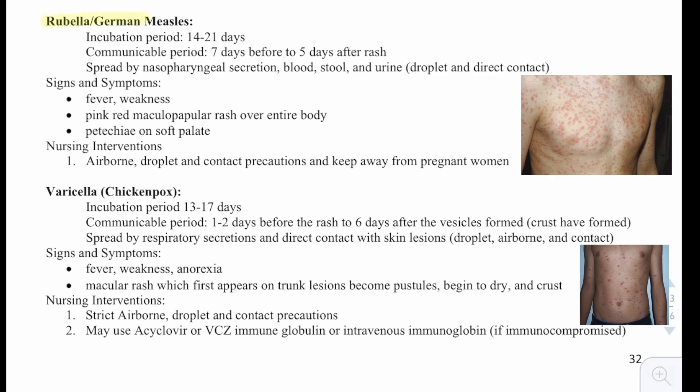Then we have rubella, or German measles. The incubation period is 14 to 21 days, with a communicable period of seven days before and five days after the rash. It is spread by nasopharyngeal secretions, blood, stool, and urine, so droplet, contact, and direct precautions.